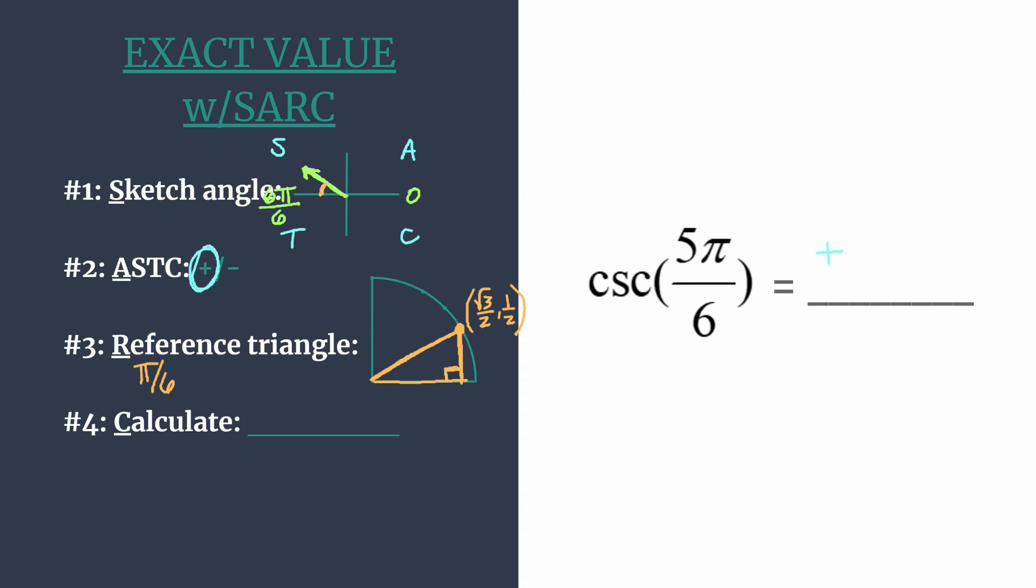Now we're ready to calculate. So on the unit circle, the cosecant of an angle is simply 1 over y. We know it's the reciprocal of sine or the reciprocal of the y-coordinate. So a quick calculation here. We have 1 divided by 1 half because the y-coordinate here is 1 half. And we know that that simplifies to 2. Taking the positive sign we found in step 2, we know that the cosecant of 5 pi over 6 must be positive 2.